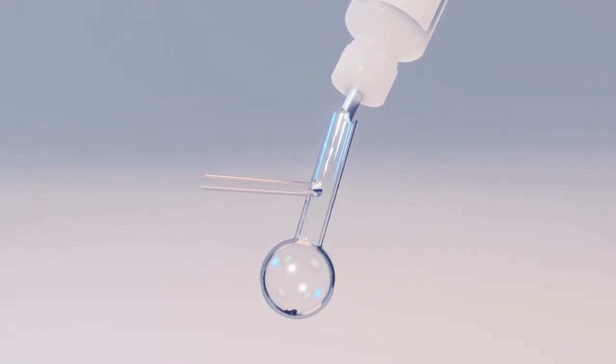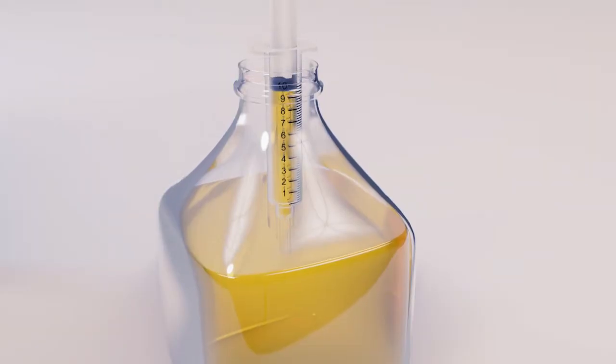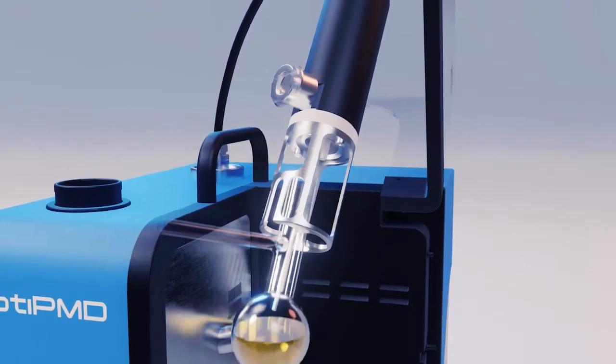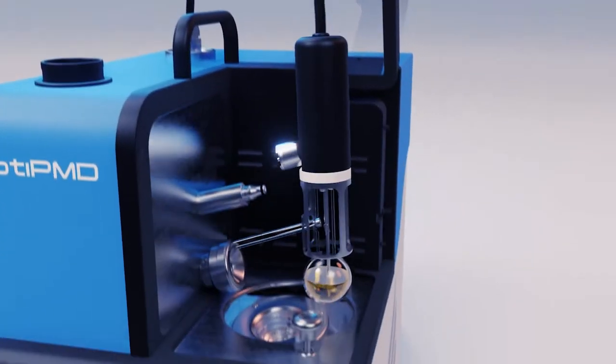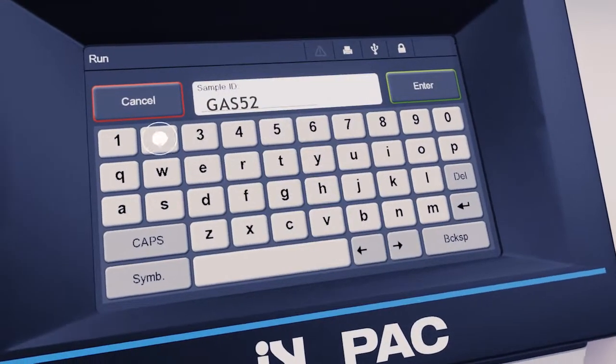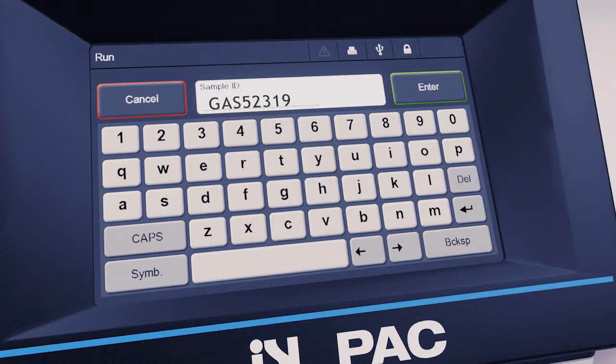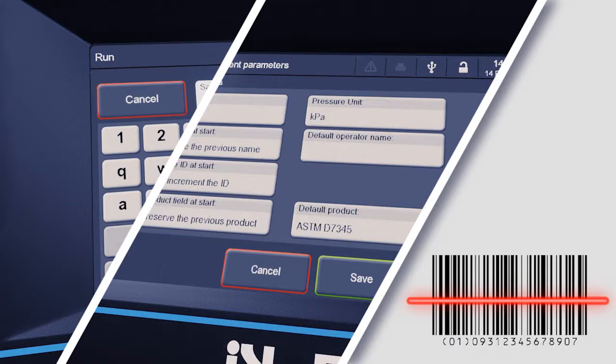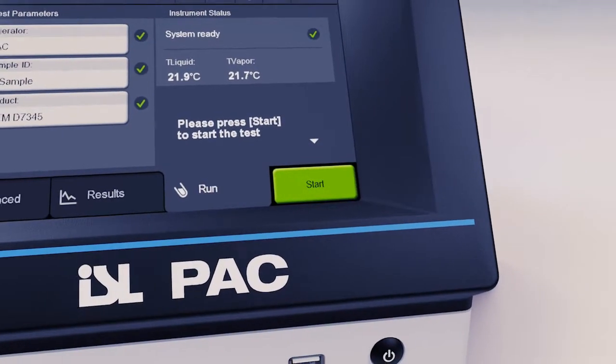Simply prepare the sample and load it into the analyzer. Type in a sample ID, select it from the preloaded options, or scan it with the barcode reader. Press Start to run the sample.